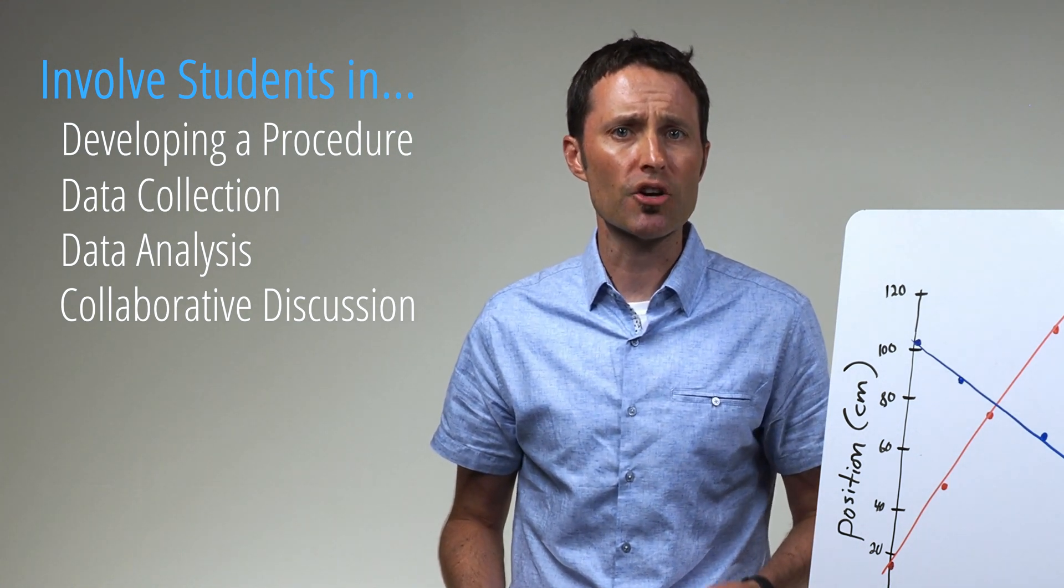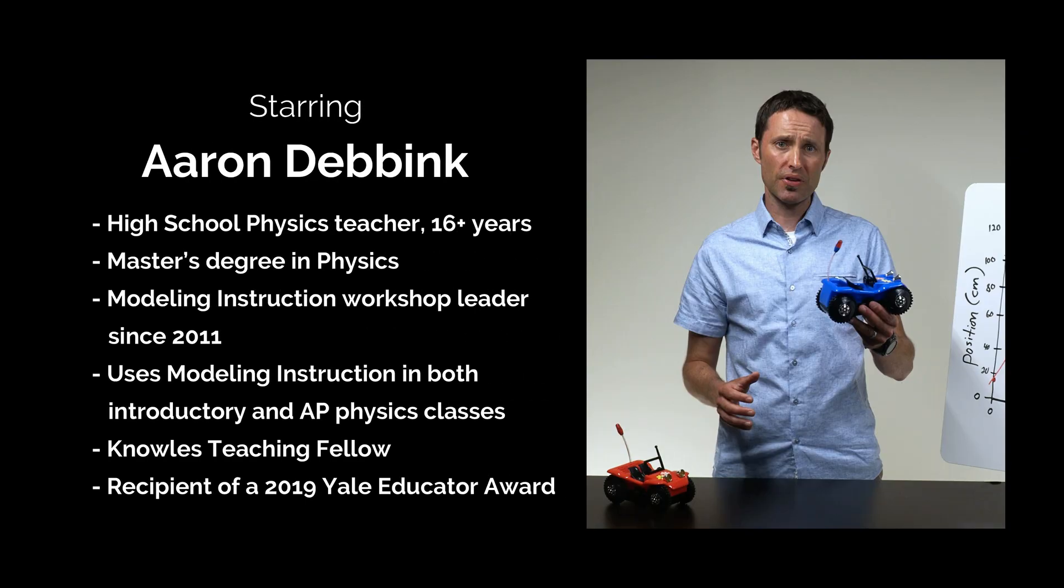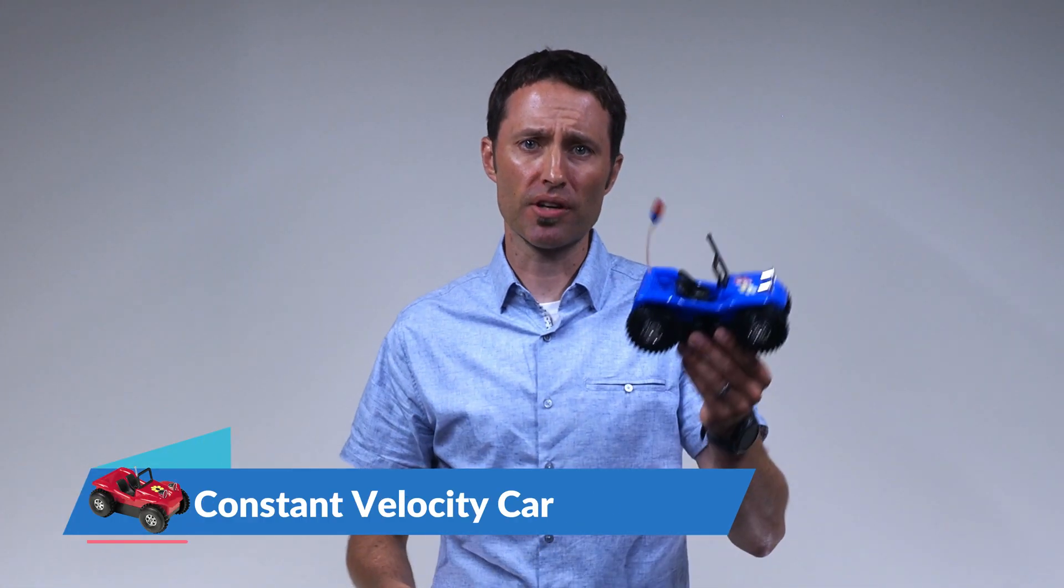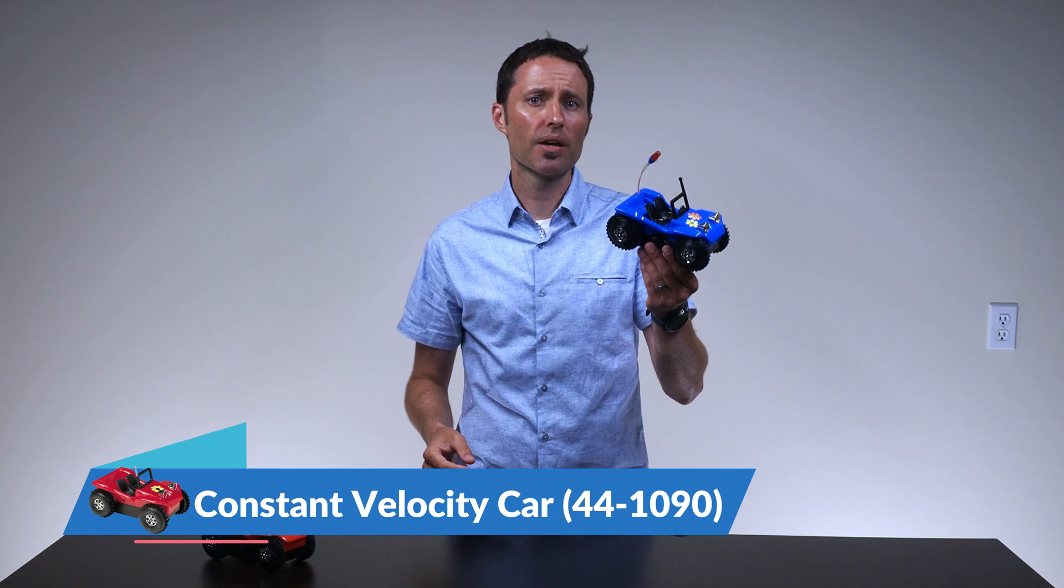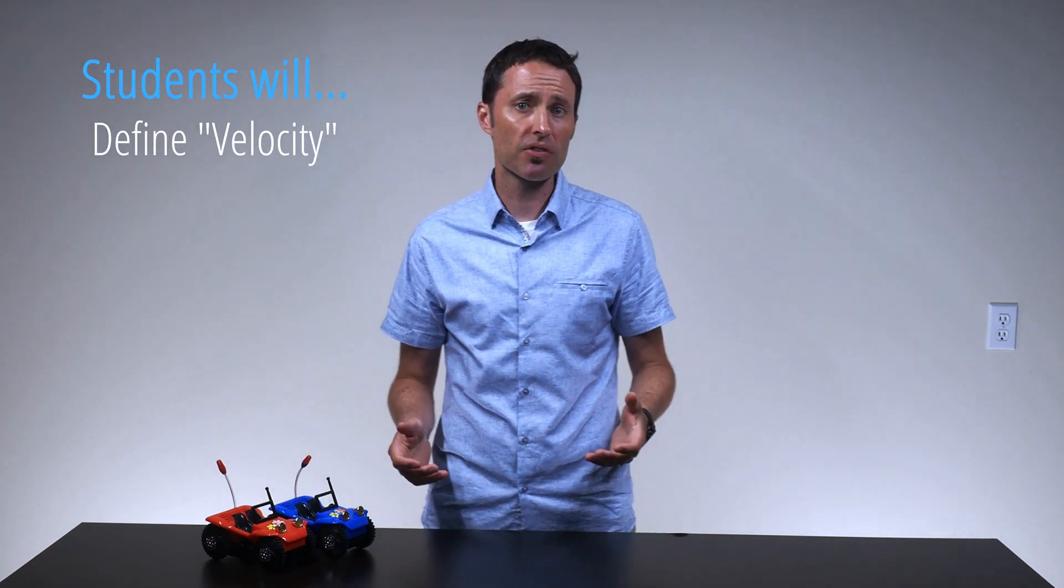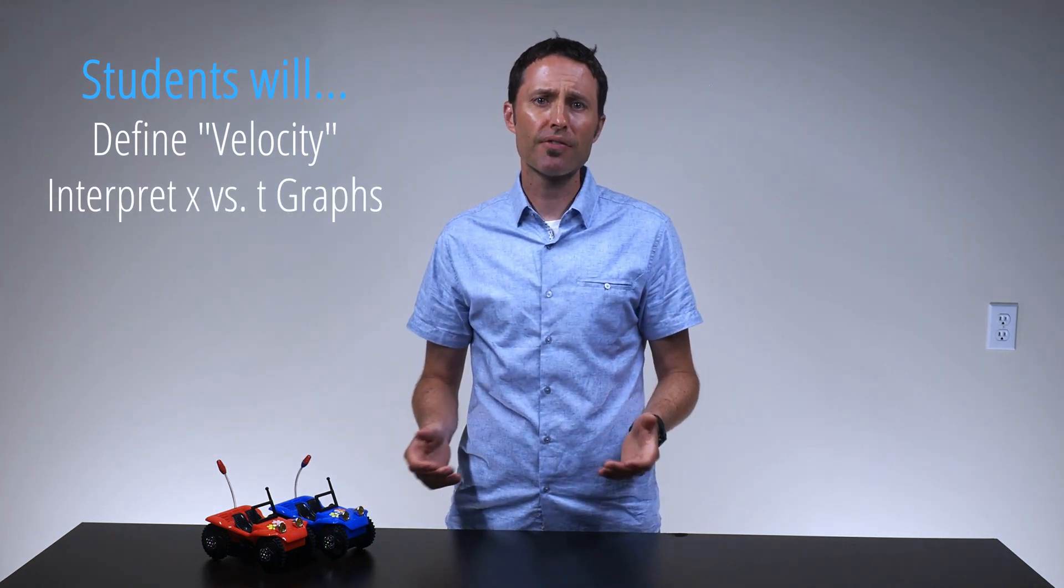This type of lab activity allows students to experience the process of science while also building a correct scientific understanding of the world around them. At the start of the year in physics, students need to learn different ways to represent the motion of objects. An easy way to do this is to have them investigate the motion of a battery-operated toy car which moves at a constant speed.